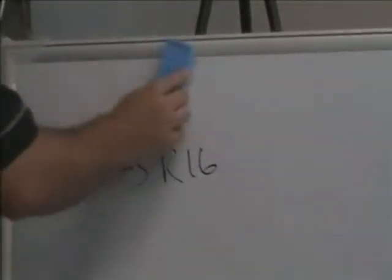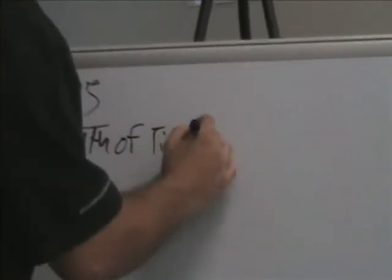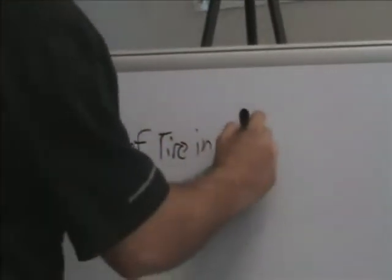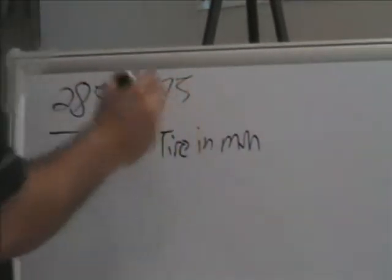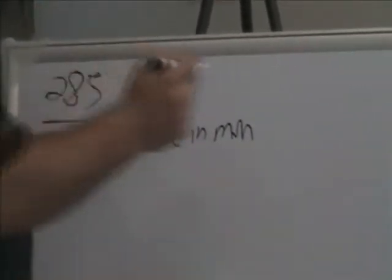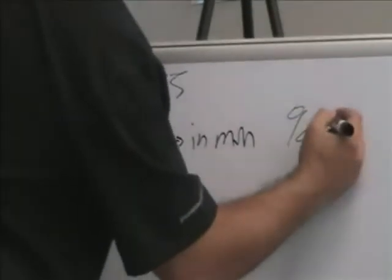So basically the way you figure this out is you're going to go something like this and you're going to have, basically what you're going to have, 285 is the width of the tire in millimeters. And then the 75, that is the percentage, the sidewall percentage, of the width.